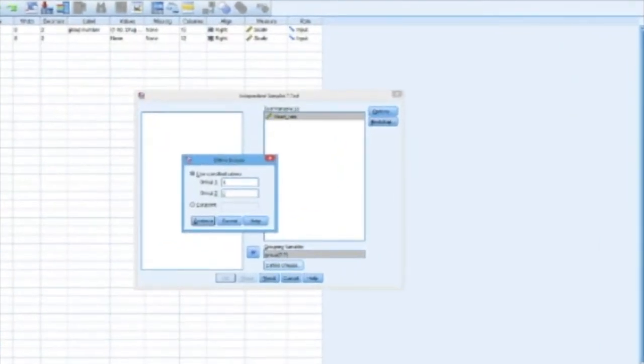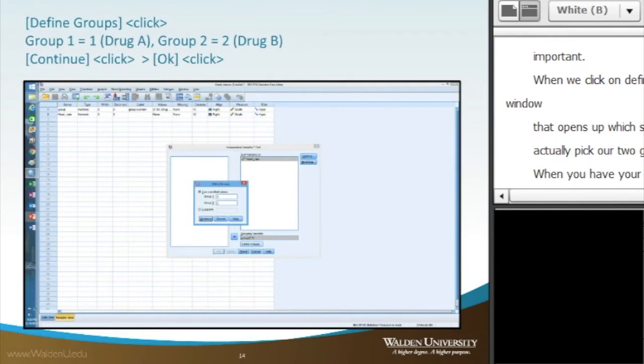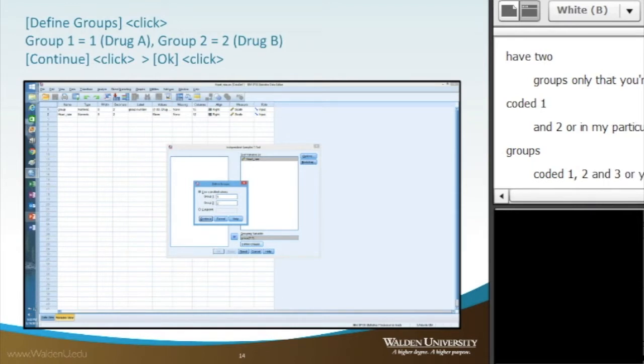And this is important. When we click on define groups, we get another window that opens up, which shows this is where we'll actually pick our two groups for the analysis. When you have your SPSS data set, you may have two groups only that you're working with, and they're coded one and two. Or in my particular data set, I've got three groups coded one, two, and three. Or you could have however many different groups in your data set.